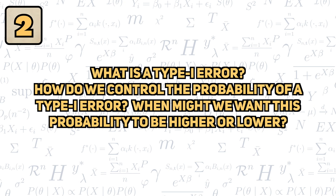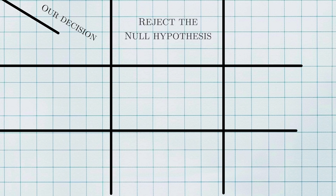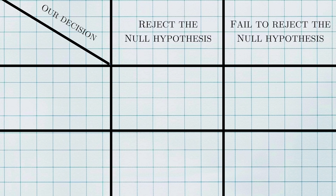What is a type 1 error? How do we control the probability of a type 1 error? And when might we want this probability to be higher or lower? A type 1 error is an error we can make after we do a hypothesis test. To understand this, you have to remember that all hypothesis tests end with a decision to reject or fail to reject the null hypothesis. On the other hand, there's the true state of the world. For our purposes, we'll frame it in terms of the null hypothesis — it's either true or not true.